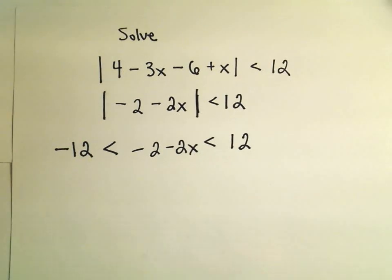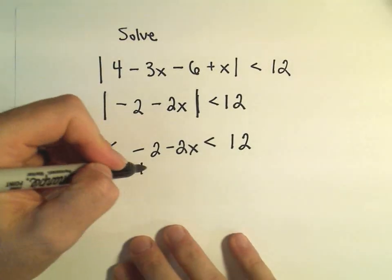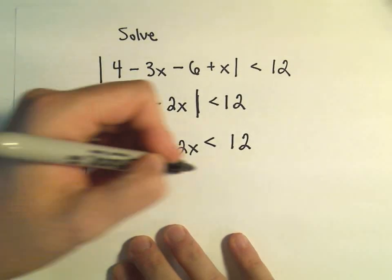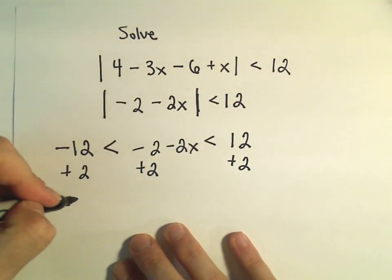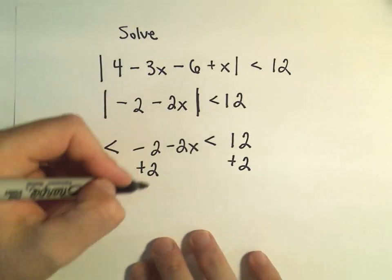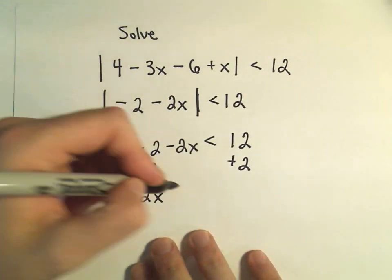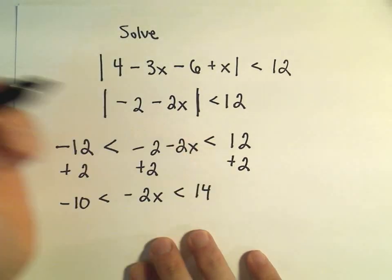And now we have a compound inequality that we're going to solve. So I would start by adding 2 to both sides, or all sides. Negative 12 plus 2 is negative 10. We'll have negative 2x in the middle. 12 plus 2 is 14.